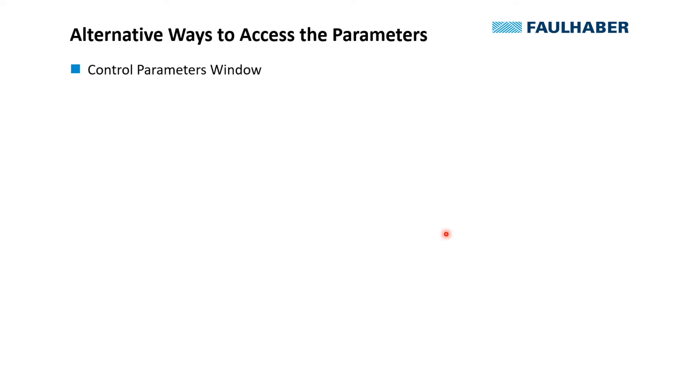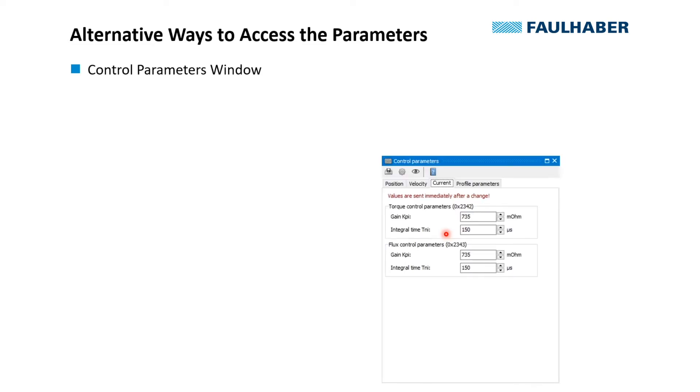The control parameters window has four tabs starting with the current loop. That's the parameters of the current loop here, which we usually don't change.